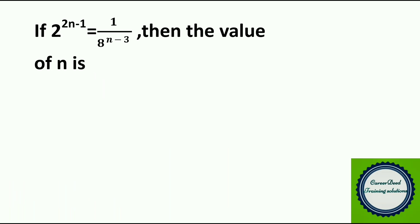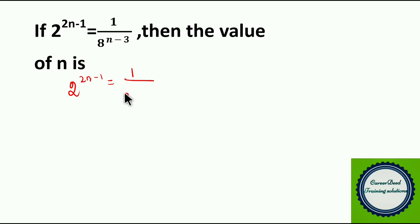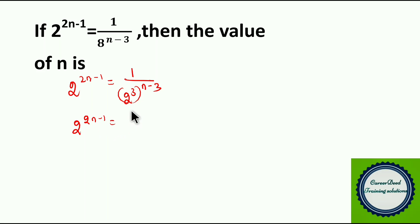Okay, we are at the first question. If 2 power (2n minus 1) equal to 1 by 8 power (n minus 3), then the value of n is dash. How can we solve this problem? This is really simple. Now 2 power (2n minus 1) can be written as it is, where 1 by 8 can be written as 2 cubed. So 2 cubed to the whole power (n minus 3). Now this is in the format of a power m to the whole power n.